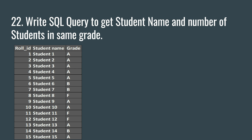This question is a tricky one where you have to get the student name, and in front of the student name you have to get the number of students in the same grade. For example, student 1 is in grade A, and in front of student 1 in the output you have to give grade A and the total number of students studying in grade A.